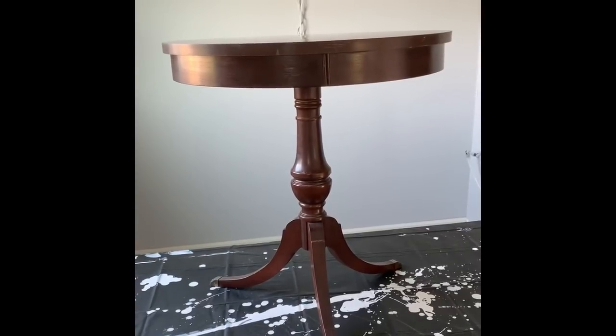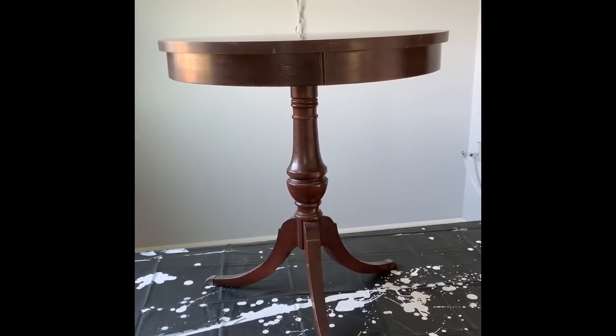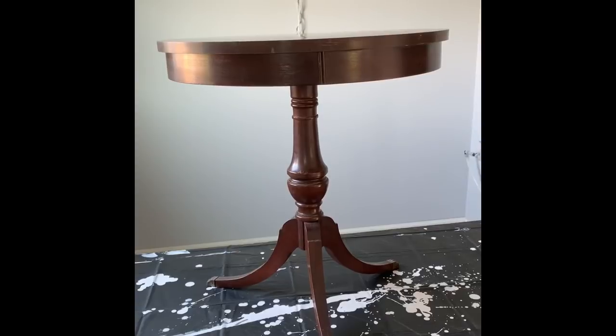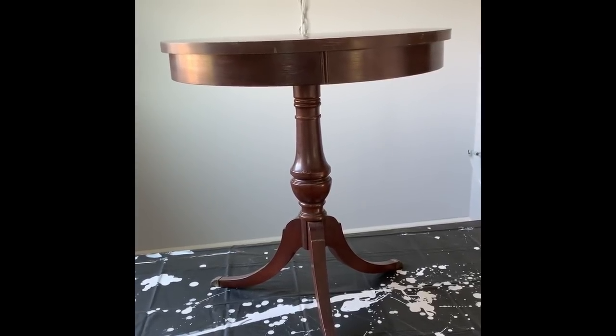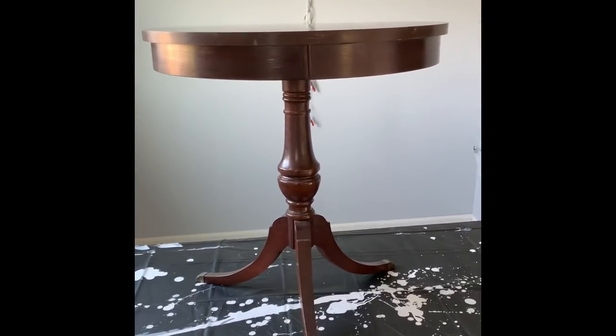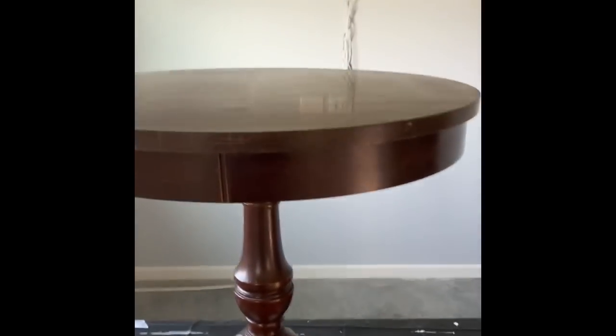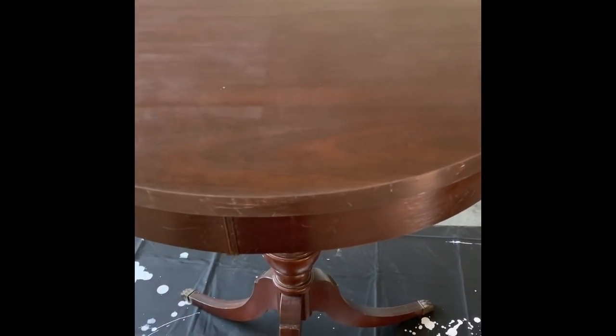This is a little table that was given to me and I want to pour the top of it. The top is Formica and it's got some little scratches on it. I've already started by sanding it down just a little bit to take off the super shiny part.